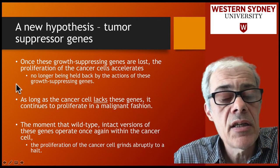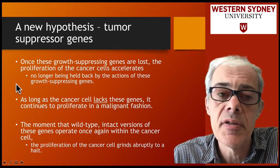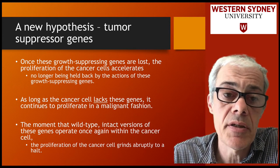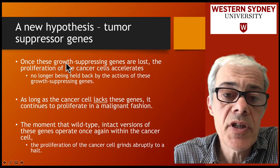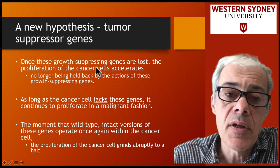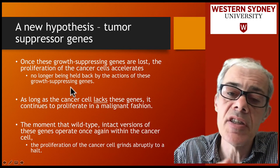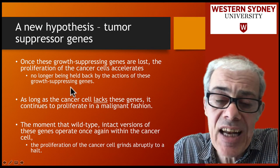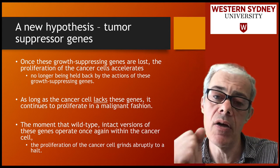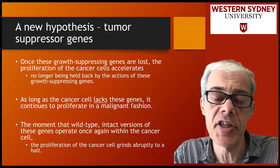So as a 1970s scientist, we have a new hypothesis: the presence of tumour suppressor genes. Once these growth-suppressing genes are lost, cancer cell growth accelerates. There's an analogy often seen in the literature between oncogenes and tumour suppressor genes.